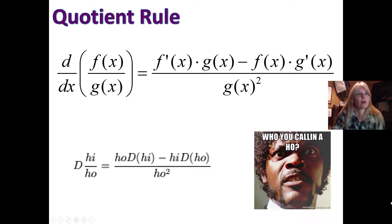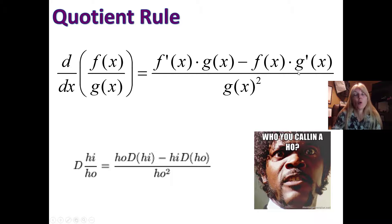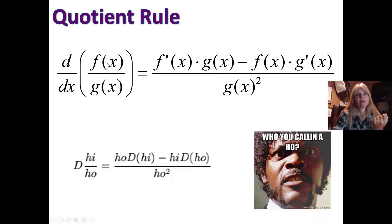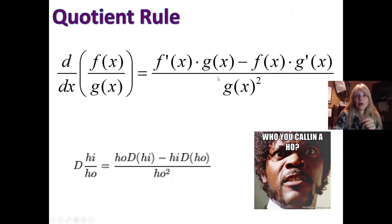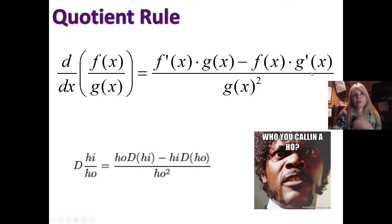What I remember — and this one's important because that's a minus sign and the order does matter — I just say in words: the derivative of the top, leave the bottom alone, minus leave the top alone, derivative of the bottom, and square the bottom. You should always square your bottoms. Derivative of top, leave bottom alone, minus leave top alone, derivative of bottom, square the bottom.